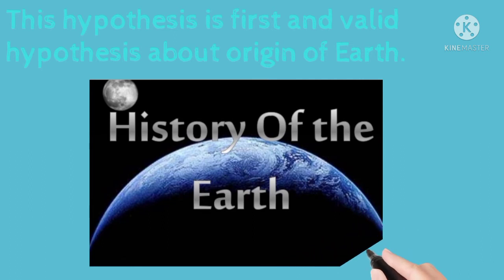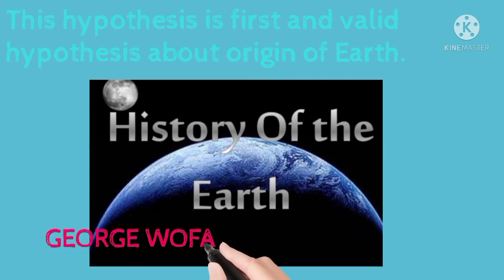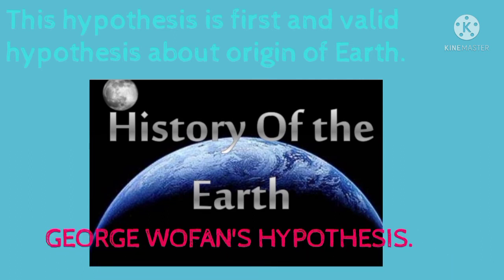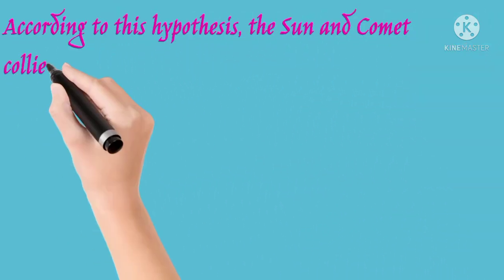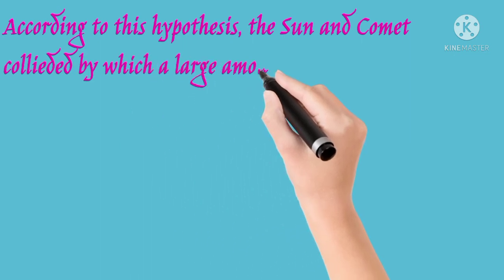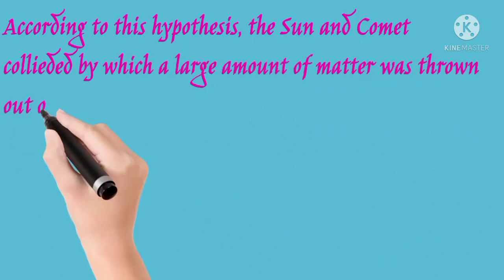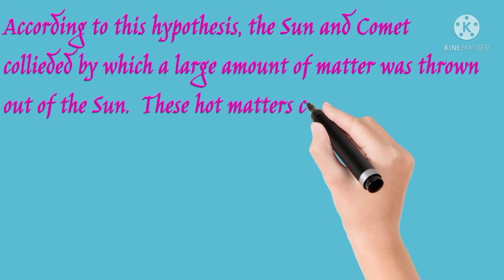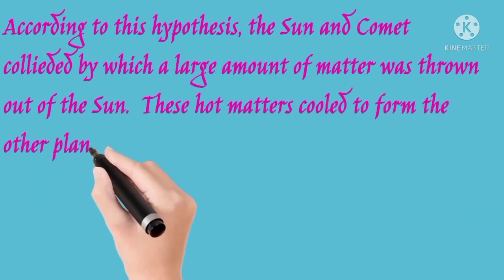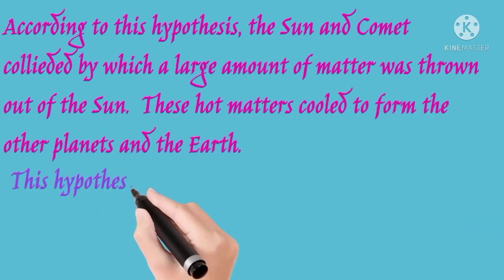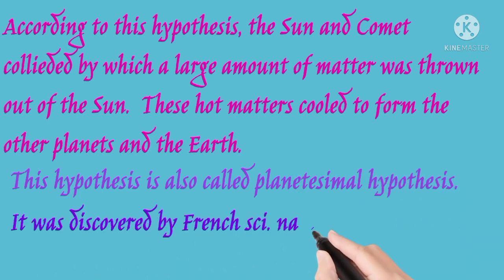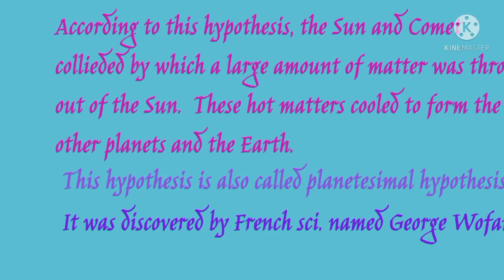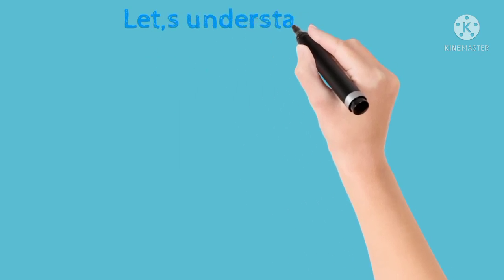This is the George Buffon hypothesis. According to this hypothesis, the sun and a comet collided, by which a large amount of matter was thrown out of the sun. These hot matters cooled to form the other planets and the Earth. This hypothesis is also called the planetesimal hypothesis. It was discovered by the French scientist named George Buffon.